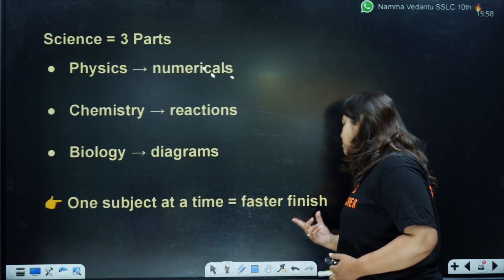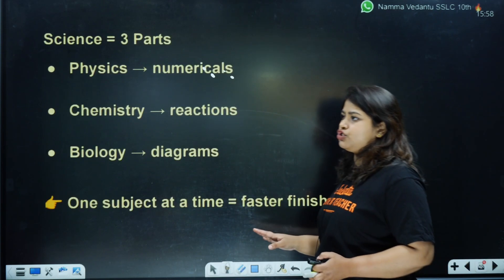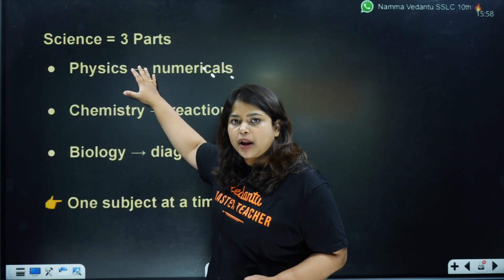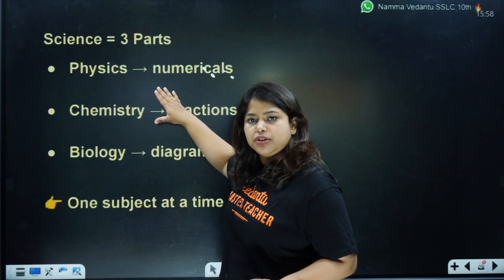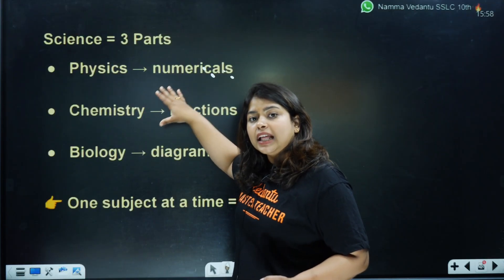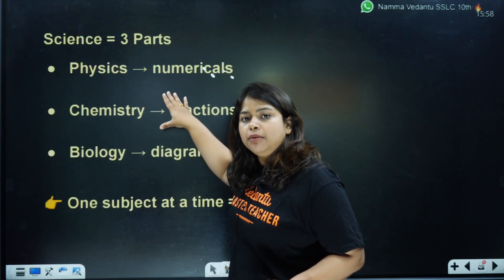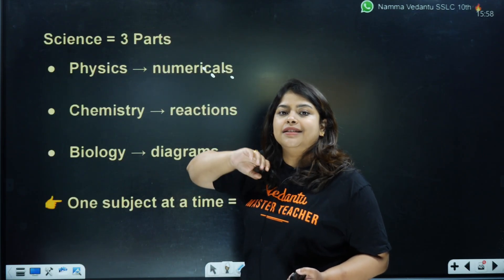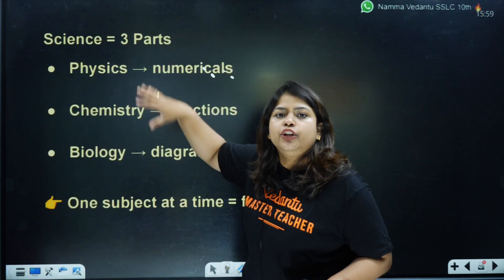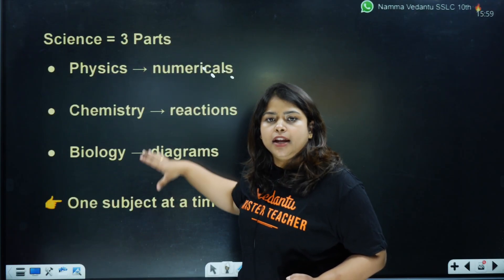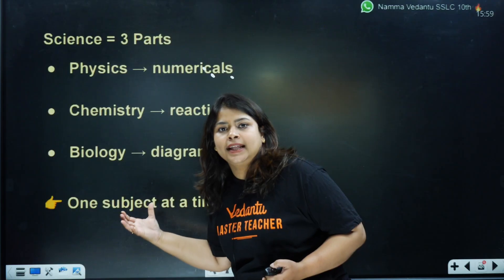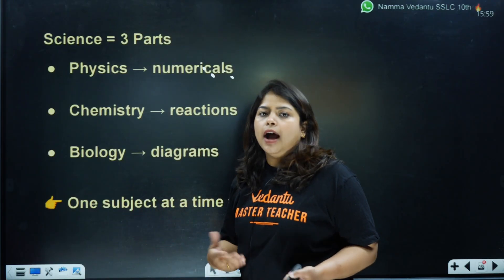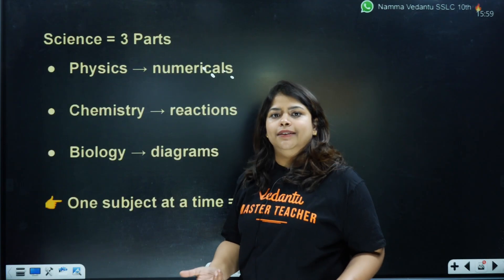One subject at a time is going to help you finish faster. For example, on Monday if you do physics for one hour, on Tuesday you do chemistry for one hour — but in that time include 10 minutes for revision of physics. As I told you before, your brain doesn't retain things if you don't use them. It doesn't apply daily. What will it do? It will think: I'm not using this, I'll remove it from memory. That is how the brain works.